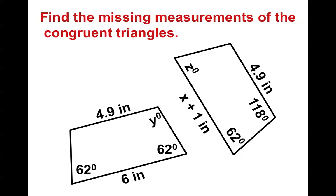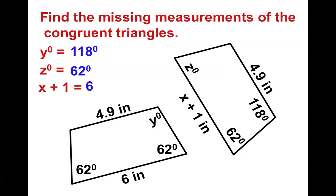Here's another one. I'd pause right now if you wanted to see if you could do this one. Hopefully you realized that angle Y equaled 118 degrees, angle Z matched up with 62 degrees, and X plus 1 equaled 6. Which means that if we wanted to find out what X equaled, we'd just go minus 1, minus 1, and X would equal 5.